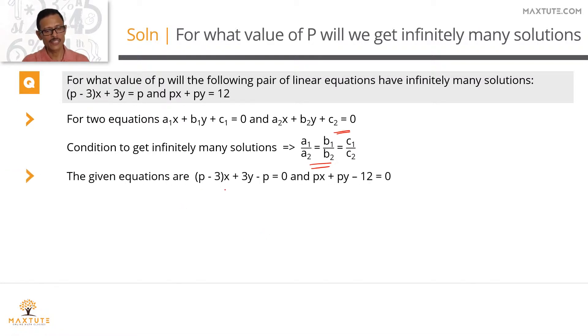What are the equations? The equations are p minus 3 into x plus 3y minus p equals 0. So a1 equals p minus 3, b1 equals 3, and c1 equals minus p. The second equation is px plus py minus 12 equals 0. So a2 equals p, b2 equals p, and c2 equals minus 12.